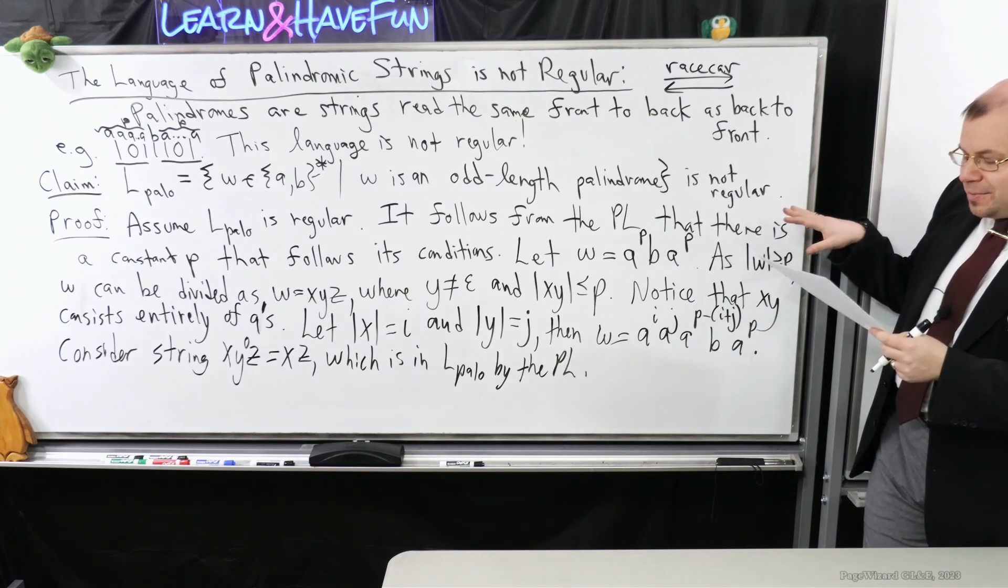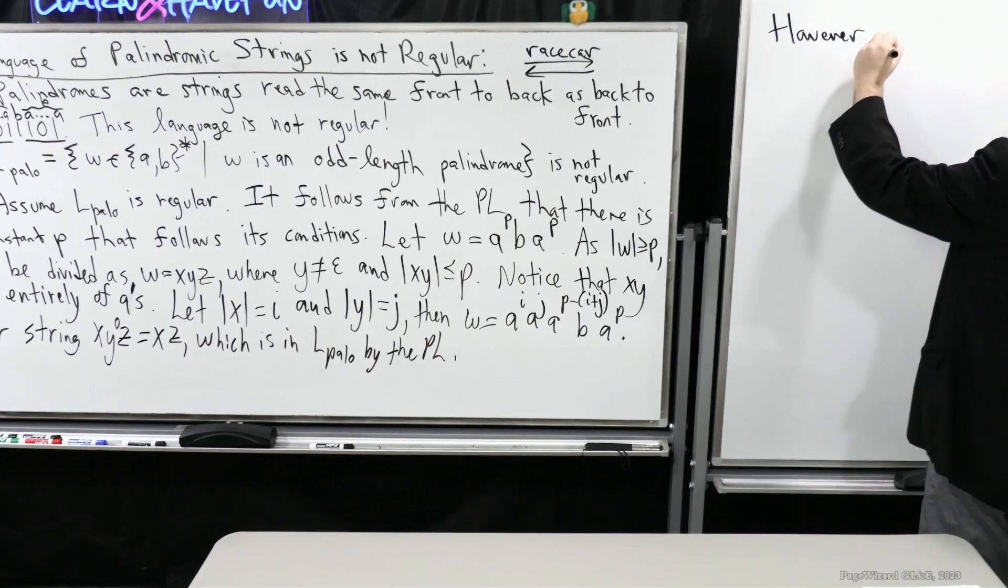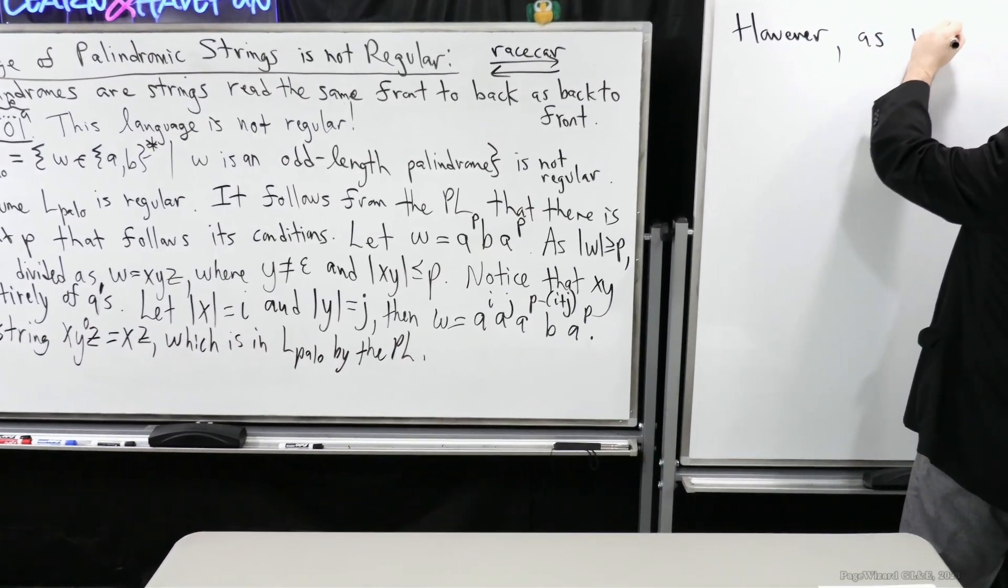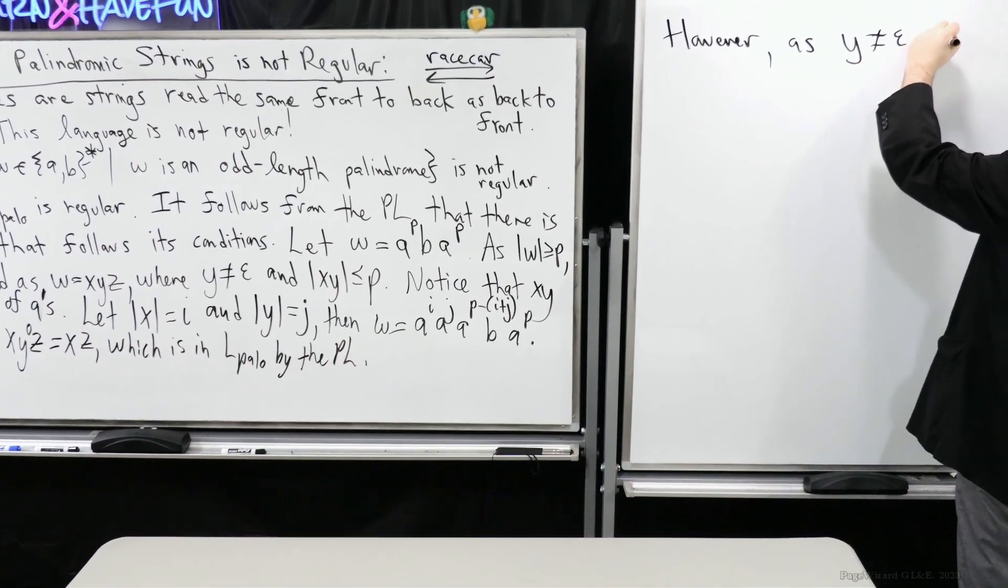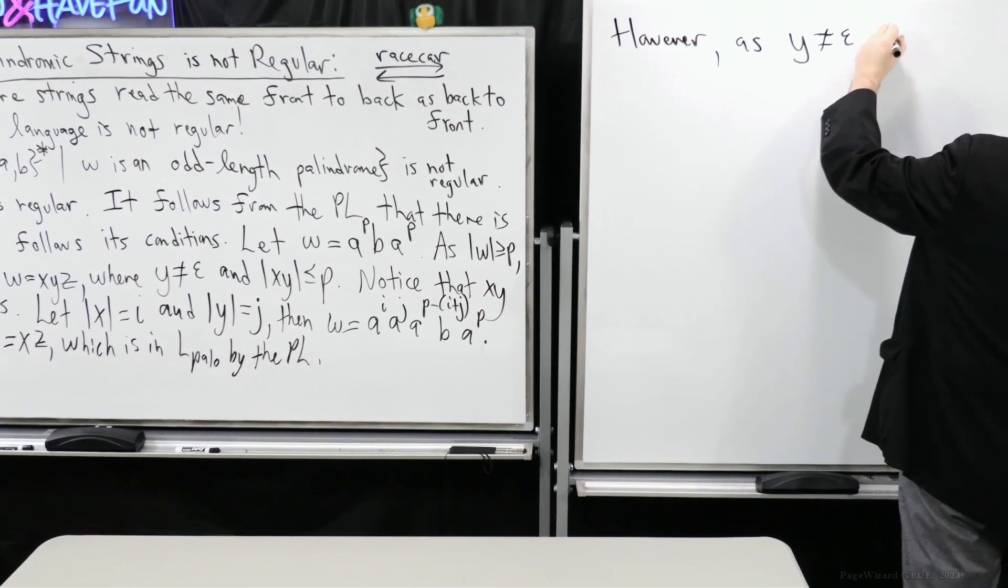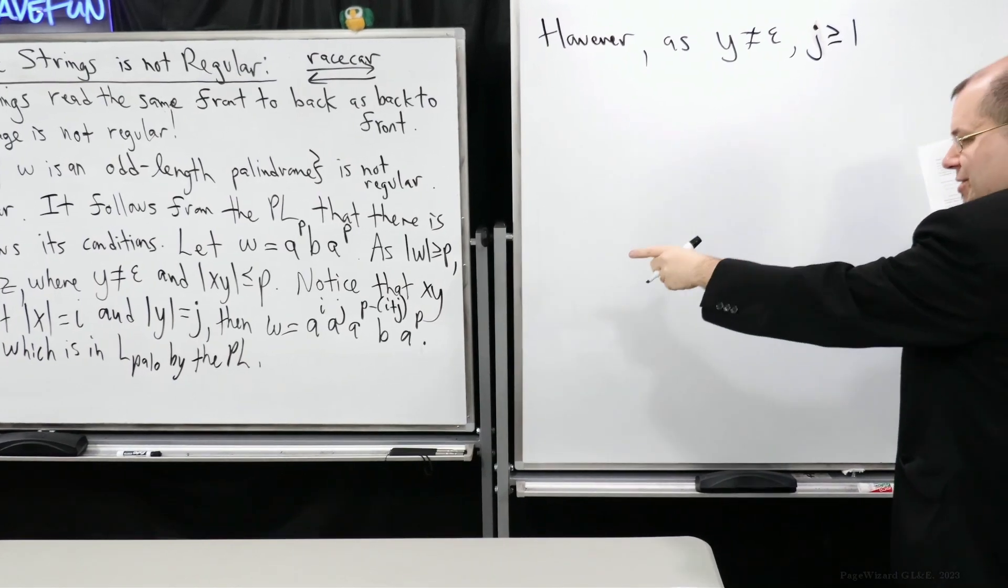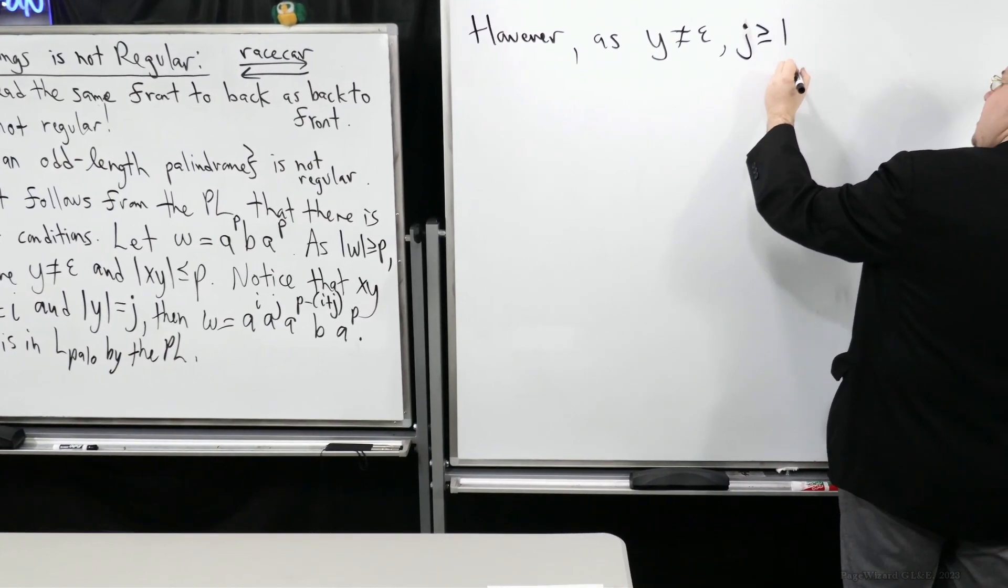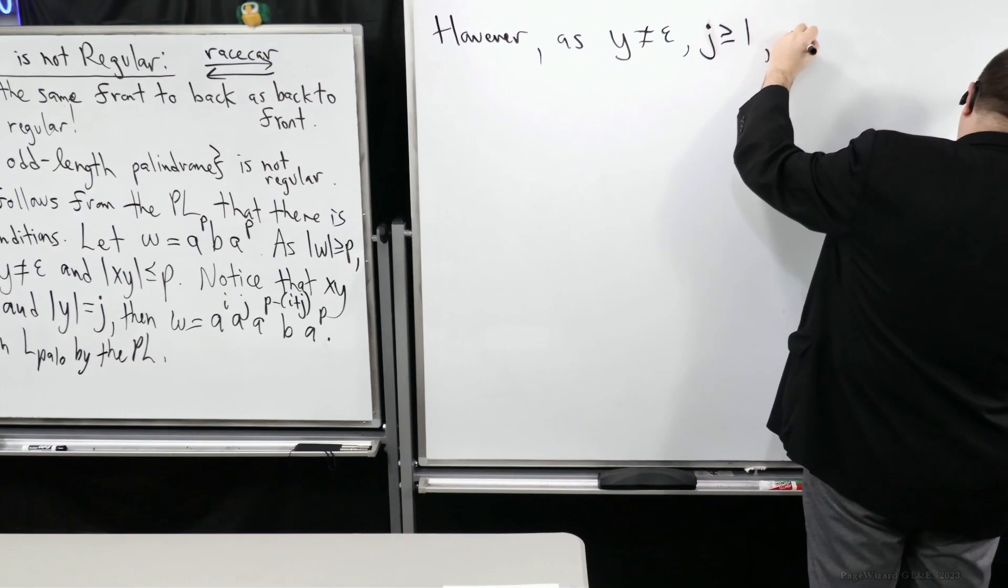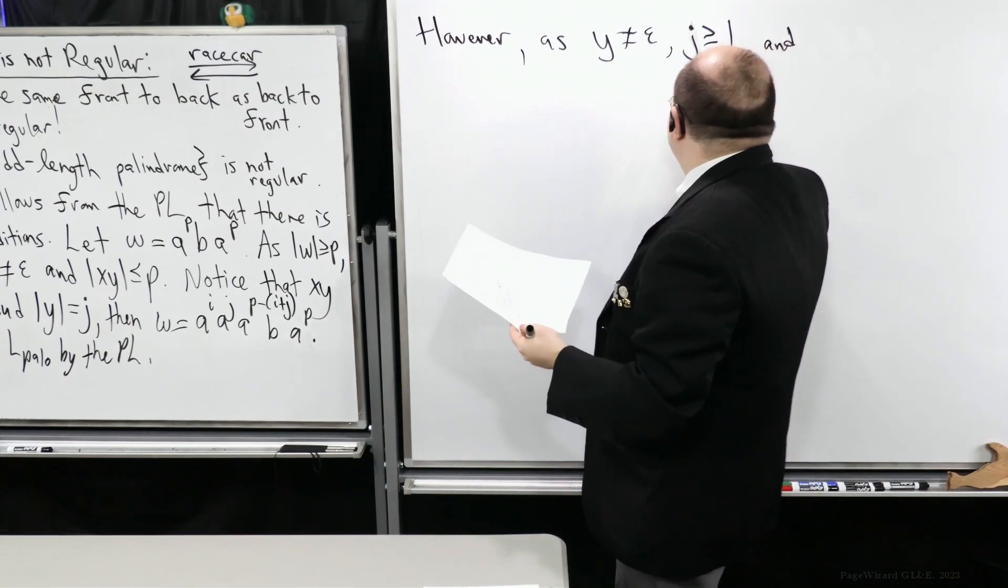So now, let's take a look at what happens to X, Z. However, as Y isn't empty, j has a particular value. It has to have a particular value. It's at least 1.